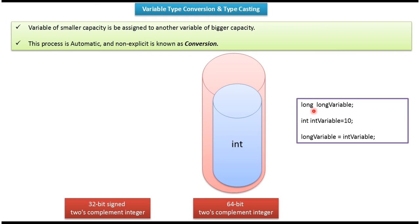Here you can see the example: a long variable, an int variable equal to 10, and I am assigning the int variable to the long variable. Here long variable is bigger capacity and int variable is smaller capacity.